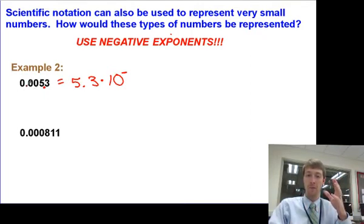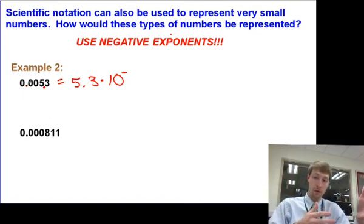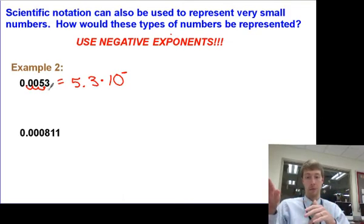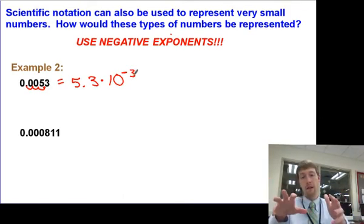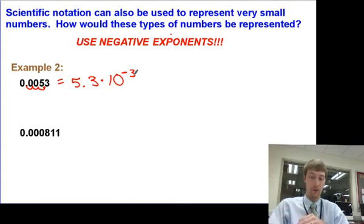That means I need a negative exponent, because I've got a really small number. If I multiply 5.3 by some power of 10, that power of 10 needs to be a really small number to make it a decimal. There are three swoops moving the decimal, so my power of 10 is 3 — but it's not positive 3, because that would be multiplying by 1,000. It's 10 to the negative 3, because that multiplies by a decimal.